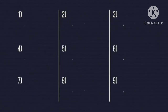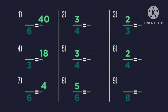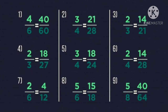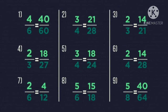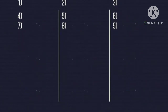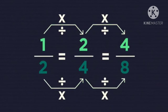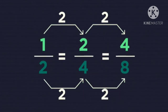Now let's try with these. Pause the video and work it out. Did you get them all correct? So now you know — you can make equivalent fractions by multiplying or dividing the top and the bottom parts of the fraction with the same number.